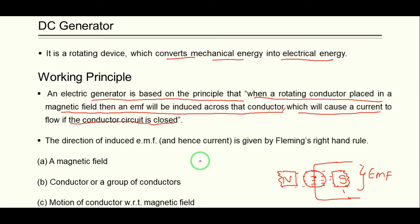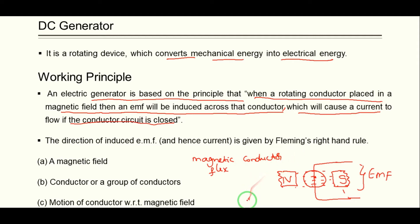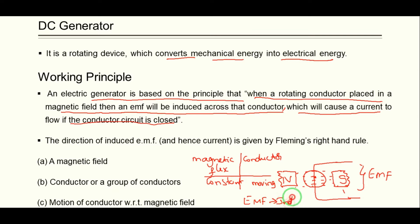To remember this principle: there are two parameters — magnetic flux and conductor — and the resultant is EMF. If magnetic flux is constant and the conductor is moving, then an EMF will be induced. This is called dynamically induced EMF. Alternatively, if the magnetic flux is moving and the conductor is stationary, an EMF is also induced.